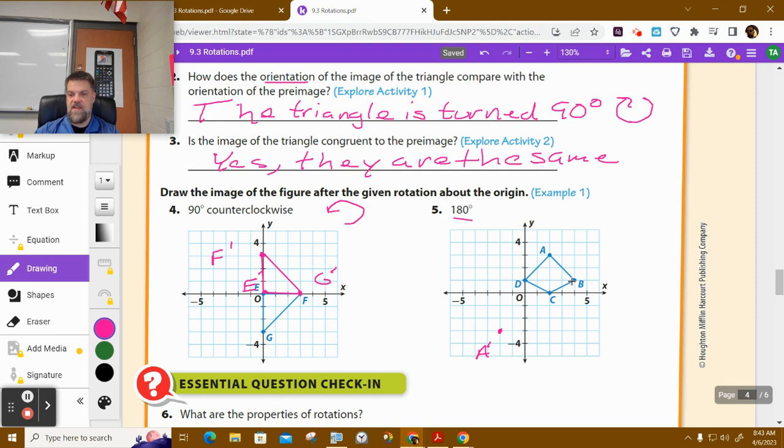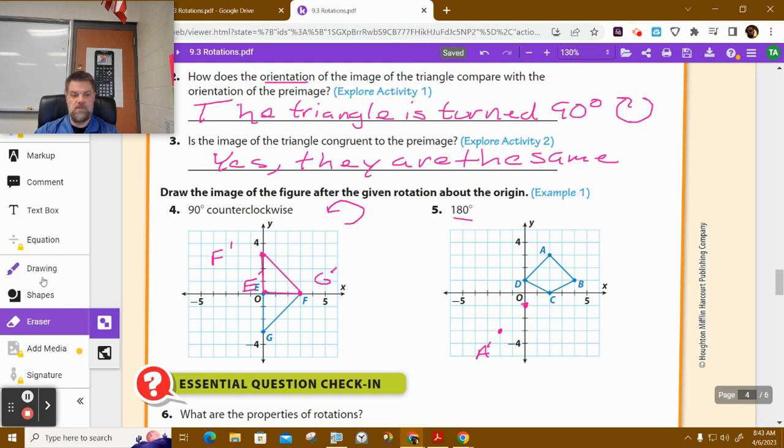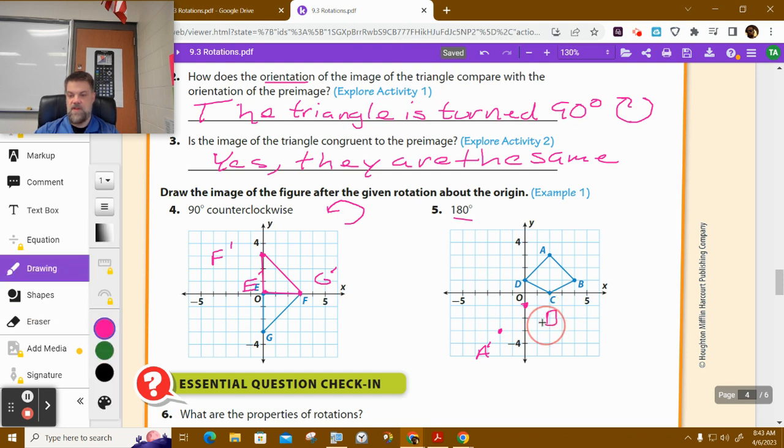And basically, I think it's just a negative. When you rotate, whatever the number is, it's just a negative of that. So this would be D prime. I'm trying to hurry before the bell rings. D prime.